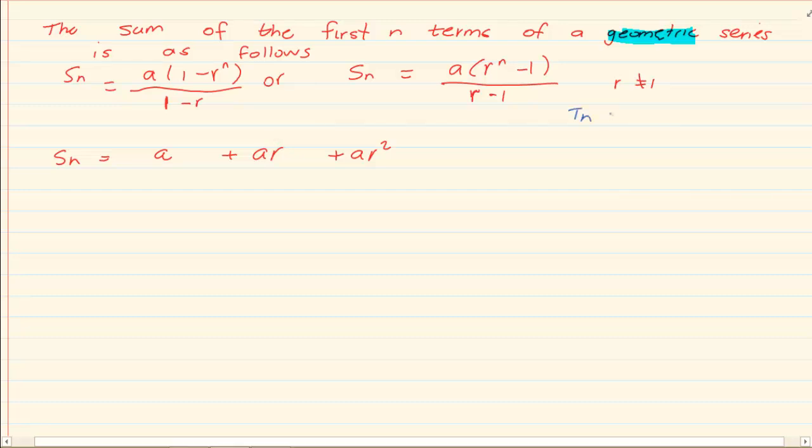Where if you had Tn is equal to ar to the power of n minus 1. In arithmetic you had it as Tn is equal to a plus n minus 1d. How am I getting a? I am substituting 0. How am I getting ar? I am substituting 2. How am I getting ar squared? I am substituting 3.